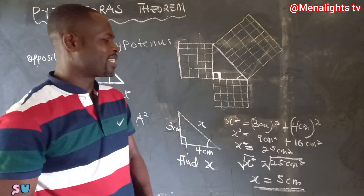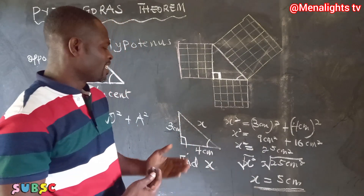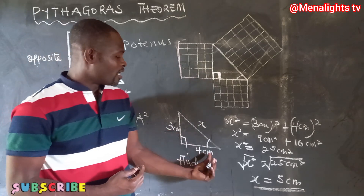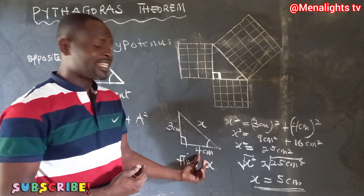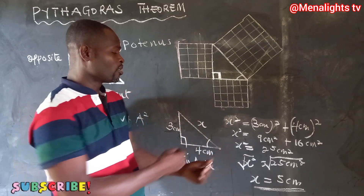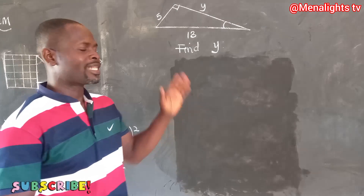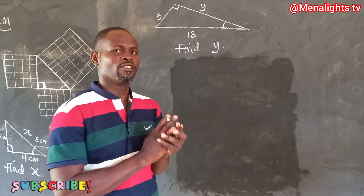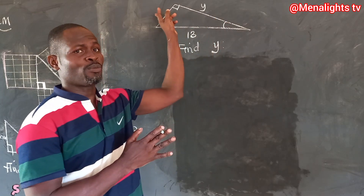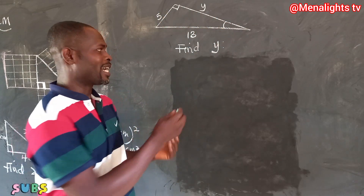Our x is 5 centimeters. So if the opposite is 3 centimeters and the adjacent is 4 centimeters, then the longer side — the hypotenuse — will be 5 centimeters. Now in the next diagram, we have to find the value of y. Since the angle is here, this is the opposite and the longer side is the hypotenuse.